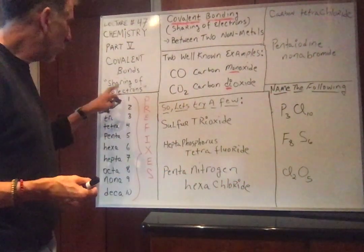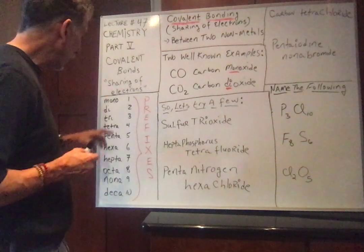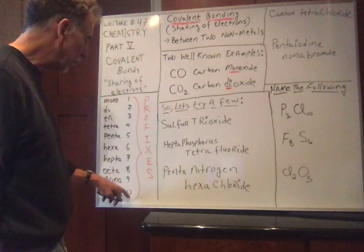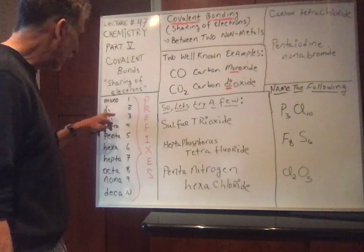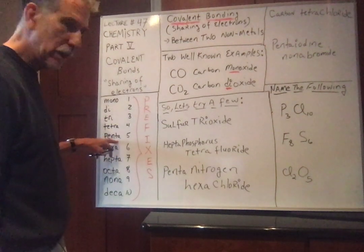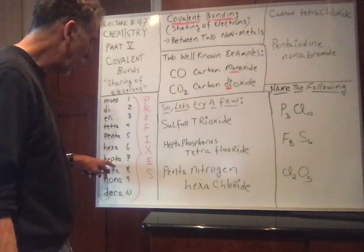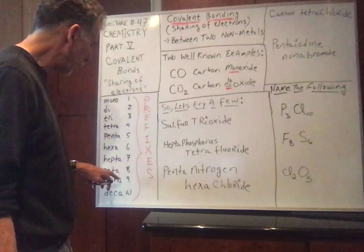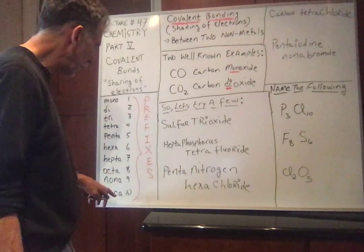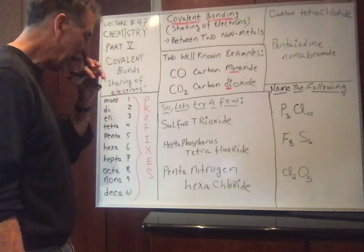We're going to learn some prefixes: 1 is mono, 2 is di, 3 is tri, 4 is tetra, 5 is penta, 6 is hexa, 7 is hepta, 8 is octa, 9 is nona, 10 is deca. You'll see how we use these in a second.